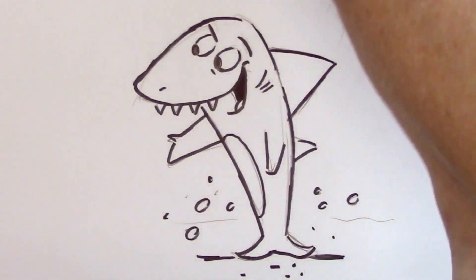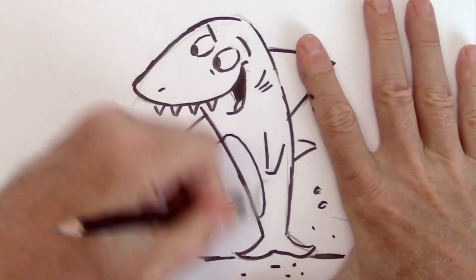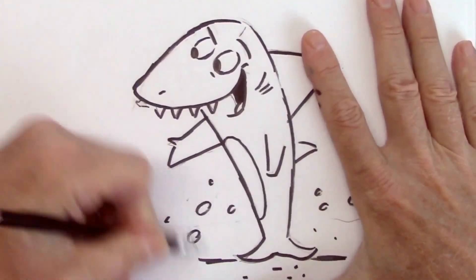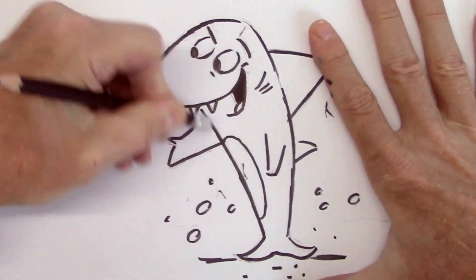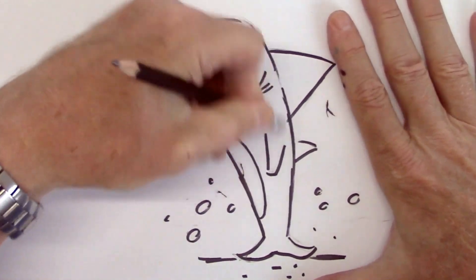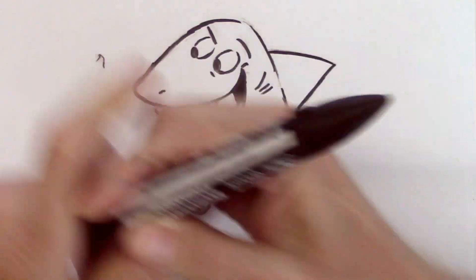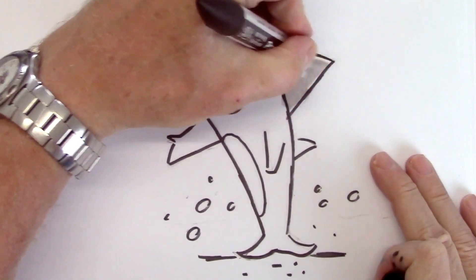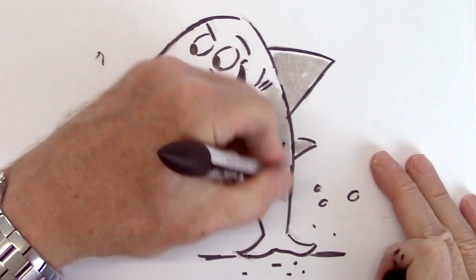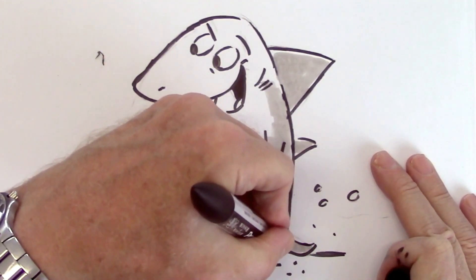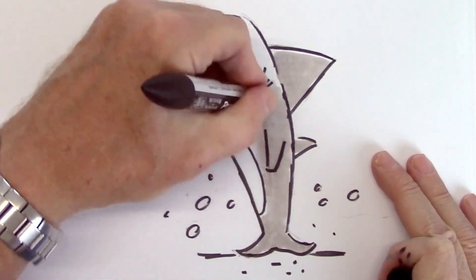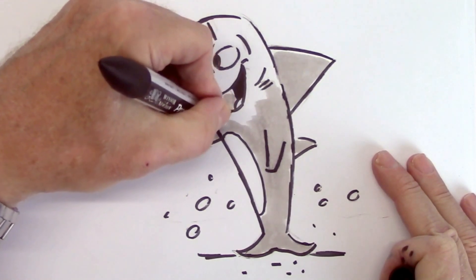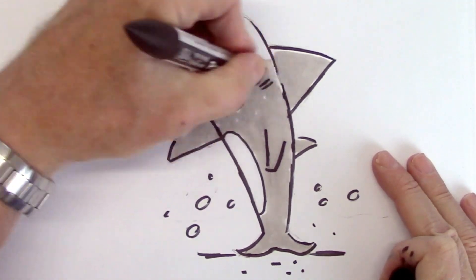How about we color him in. That should be fun. Let me first erase some of this pencil stuff. Here we go. And you don't have to be realistic. You can make the gray shark slightly green, somewhat blue, whatever you feel like doing. Or you can go really crazy and make a pink shark.